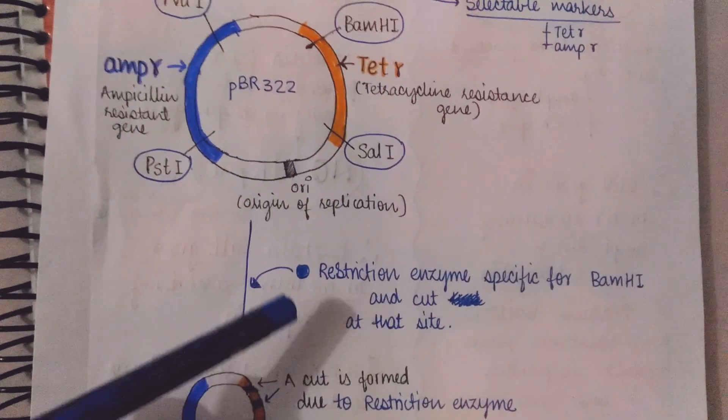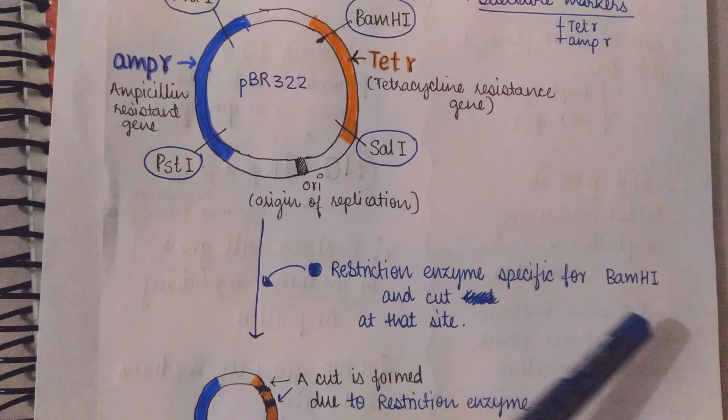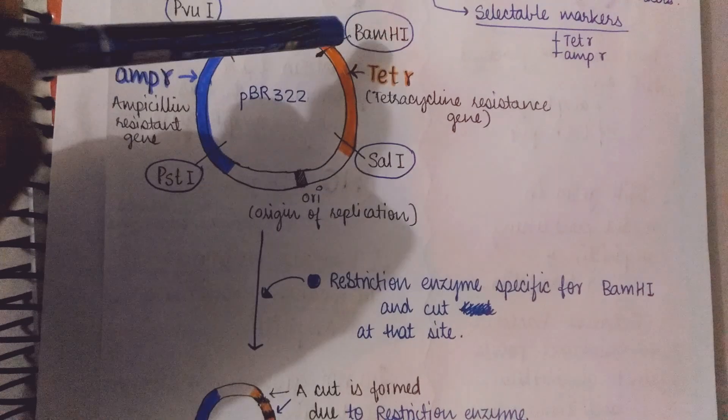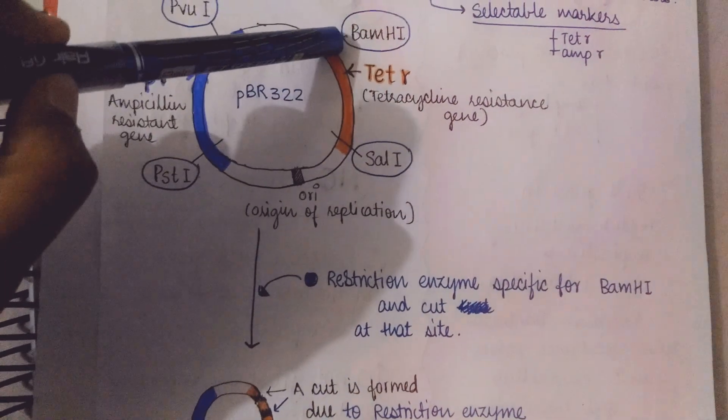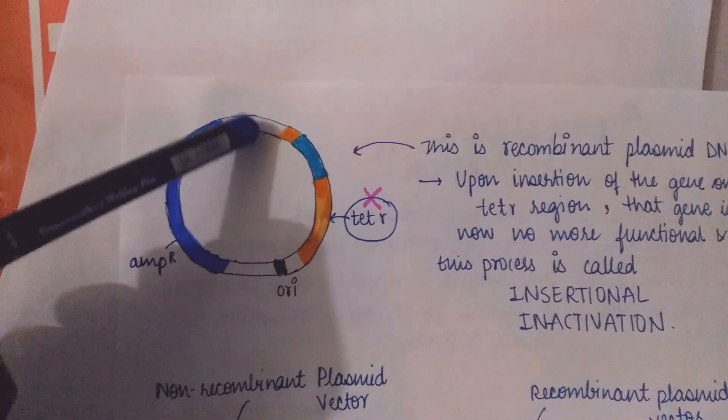Now we will add the restriction enzyme which is specific for BAMH1 which will cut at that site. So BAMH1 will cut at this site. Then gene of interest is added. When gene of interest is added it will form a structure like this.